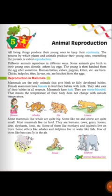We will focus on animal reproduction in this chapter. All living things produce their young ones to keep their continuity. The process by which plants and animals produce their young ones — the new young one is produced that resembles the parents.